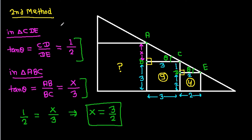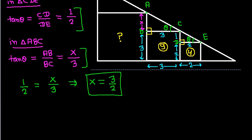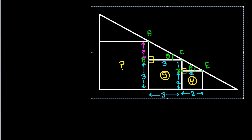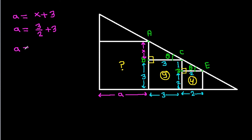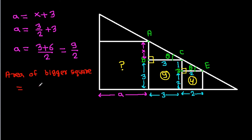Now suppose the side of the bigger square is A. Then A equals X plus 3, and A equals 3 over 2 plus 3, which gives A equals 3 plus 6 over 2, that is 9 over 2. So the area of the bigger square is A squared, which is 9 over 2 squared, and that equals 81 over 4.